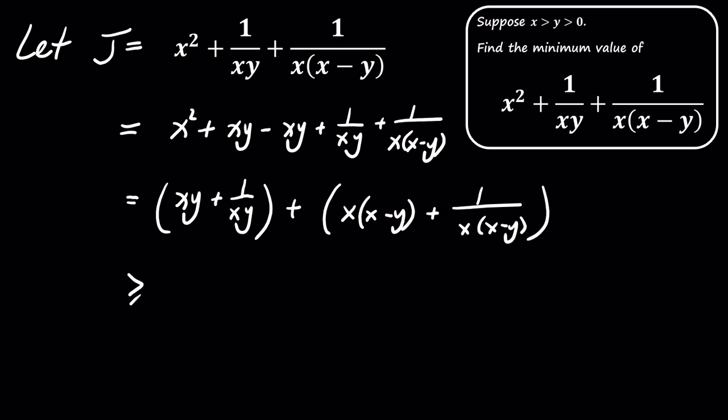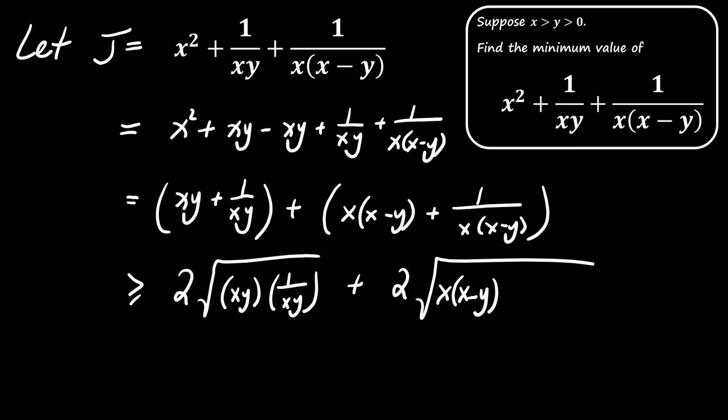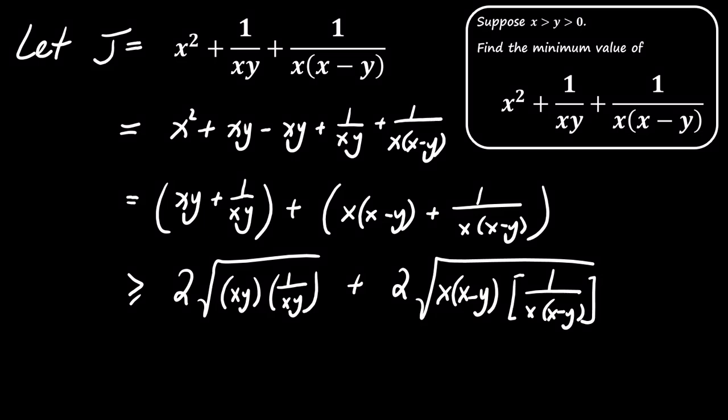Next, we apply the AM-GM inequality to each part. First, consider the terms xy plus 1 divided by xy. By the AM-GM inequality, we know that the sum of these terms is greater than or equal to 2 times the square root of their product, which simplifies to 2.